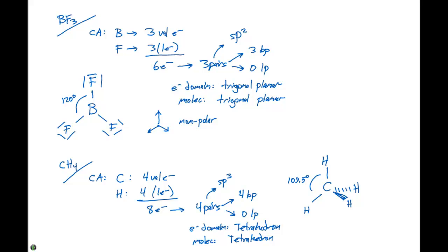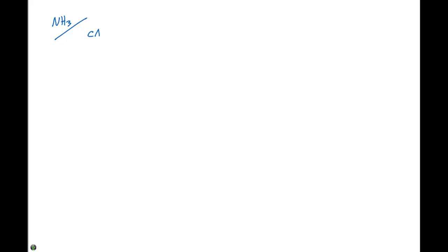The next example we're going to look at is ammonia. Ammonia is similar to CH4 but there are some key differences. For NH3, the central atom is nitrogen, which has five valence electrons. Hydrogen atoms are the ligands — there are three of them, and each contributes one electron to the bonding. This gives us a total of eight electrons and four pairs of electrons.